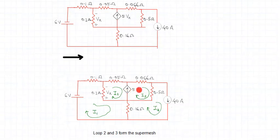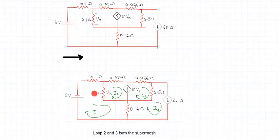The dependent source has value 5vx, which means it is a voltage-controlled current source because it is a function of some voltage vx. Somewhere in the network vx must be present. Looking at the circuit, vx is the voltage across the 2-ohm resistor, with polarities clearly assigned. This current source is a function of this voltage vx.